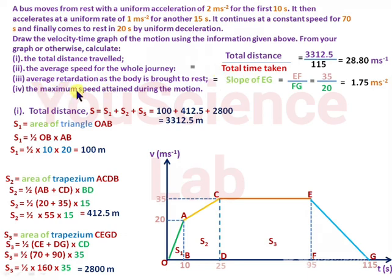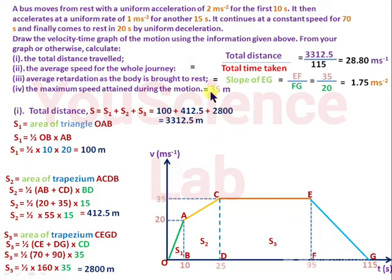The maximum speed attained equals the greatest speed on the graph. The maximum speed is equal to 35 meters per second.